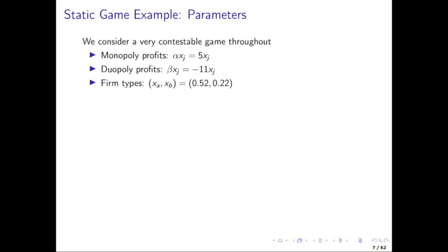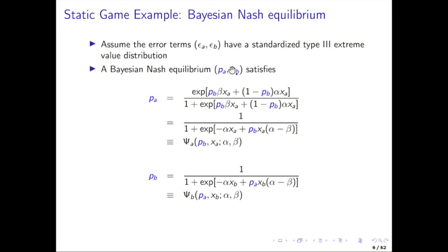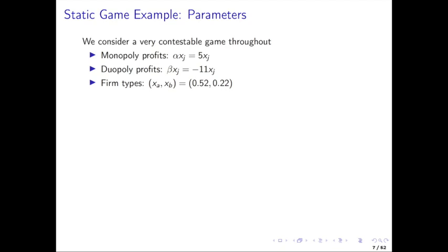Let's put in some parameter values — alpha equals five, beta equals minus eleven — so you really get hammered in the duopoly case, your duopoly profits are much lower than monopoly profits. That's really strong anti-coordination in this game. We have two firm types X_A and X_B that index how much weight is put on the deterministic part of the profits relative to the idiosyncratic shocks to investments.